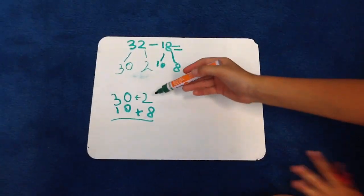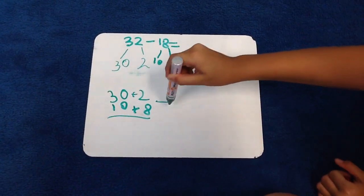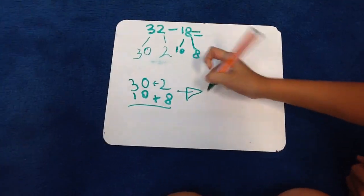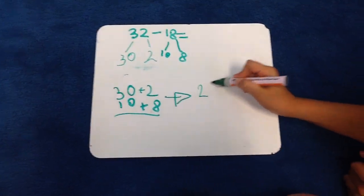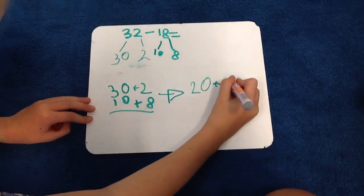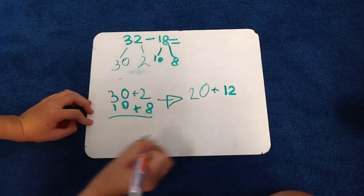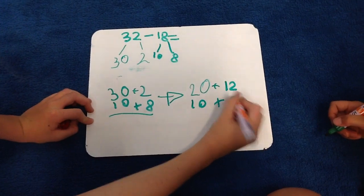Here you can see we can't do 2 minus 8. So we take away 10 from the 30, making it 20, and the 2 becomes 12. That still makes 32. The 10 and 8 stay the same.